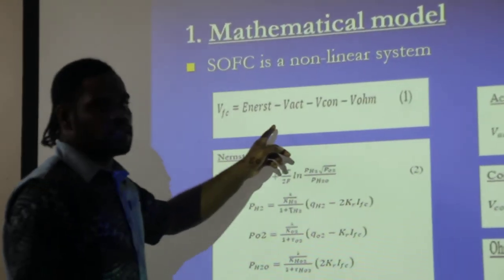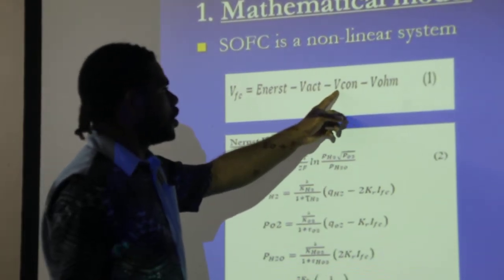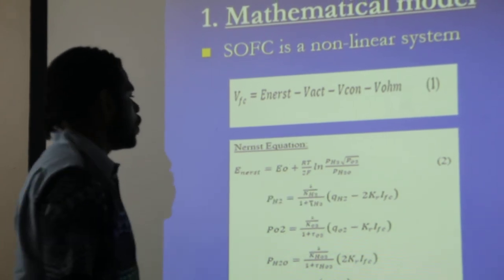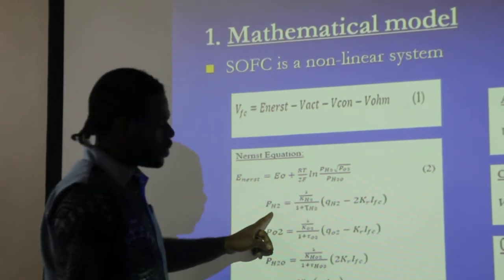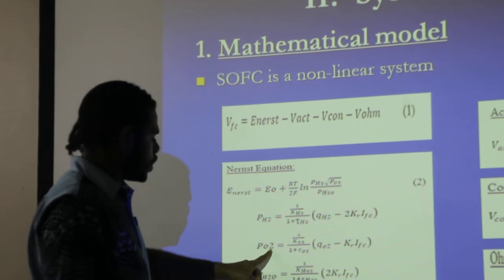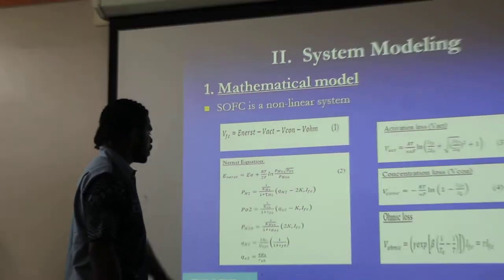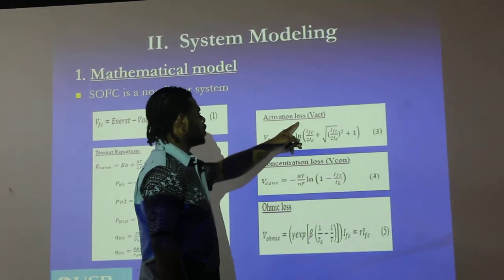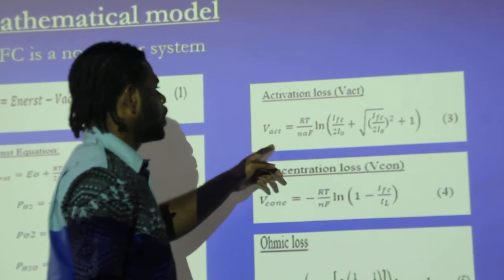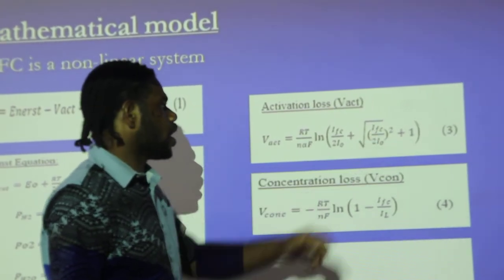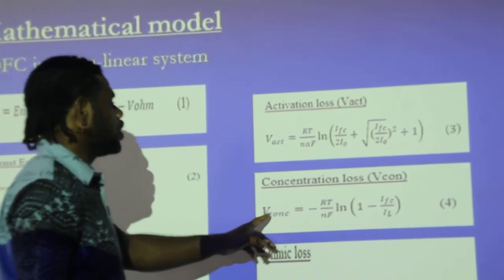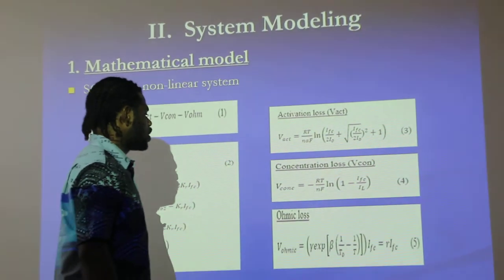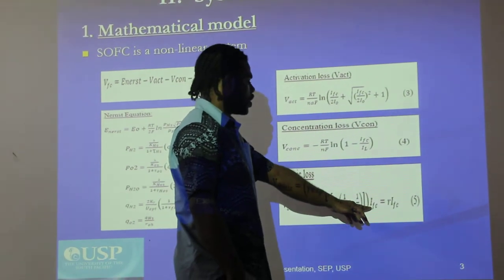The output voltage is described as the Nernst equation minus the activation voltage, minus the concentration voltage, and the ohmic voltage. From Equation 2, you can see the Nernst equation, which basically depends on the partial pressure of hydrogen, partial pressure of oxygen, partial pressure of water, and also the flow rate of hydrogen and oxygen. The activation voltage equation also depends on the temperature and current density IFC. The concentration voltage depends on temperature and IFC. The ohmic voltage similarly depends on IFC.